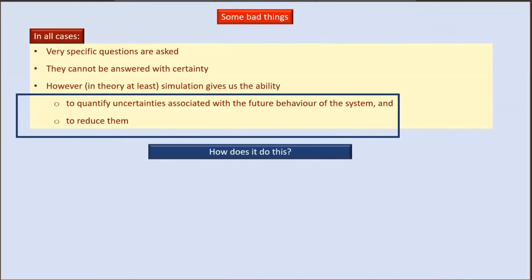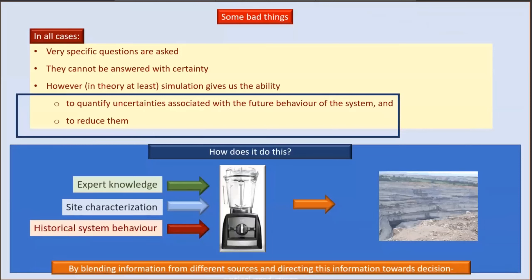However, there is enough information to reduce the uncertainties of decisions that matter, and that is why we do decision support modelling. Simulation is part of that whole process. The model is used in conjunction with something like PEST or PEST++ to quantify the uncertainties of decision-critical predictions and to reduce those uncertainties — extracting information from data of very different kinds, mixing it all together, and pointing that information at the decision-critical predictions that support management of an environmental system.